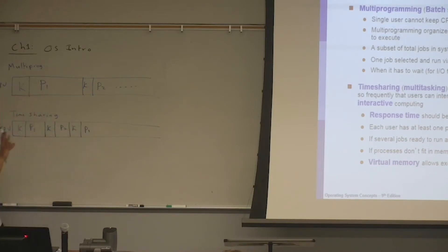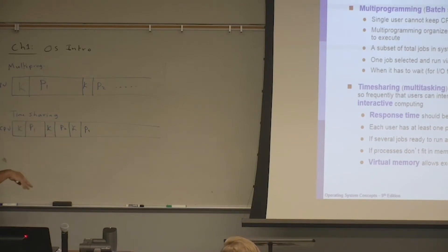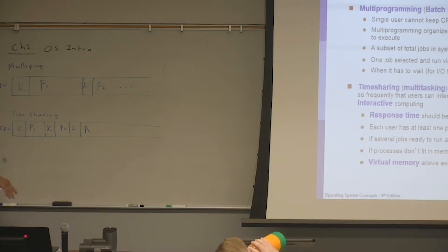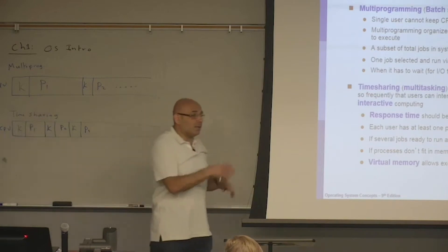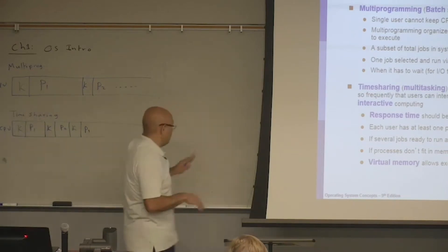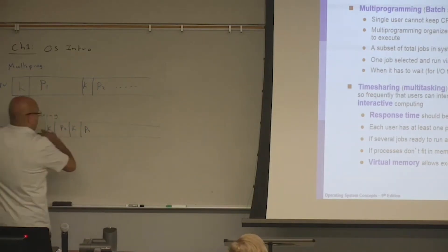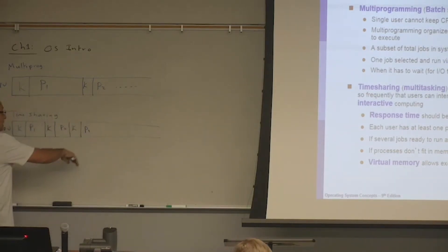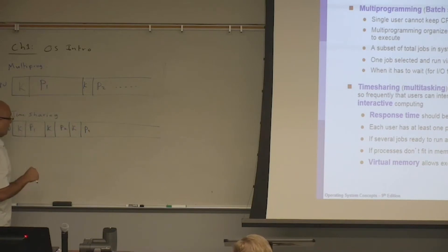Just as an example — don't think that time-sharing is simply alternating two processes. This is just one example. Time-sharing is switching between processes, and you may have many processes. We don't know which process gets the CPU next, because which process gets the CPU next is a scheduling decision.